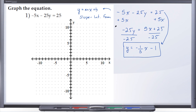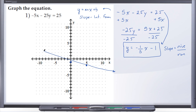Let's go ahead and graph this line. Negative 1 is our b, our y-intercept, so we go to negative 1 on the y-axis and plot that point. From here we use our slope — rise over run. Because our rise is negative, instead of going up we fall. So we go down 1 and then run to the right 5. That gives us our next point. We only need two points to create a line, so just pretend that's a straight line. There's our graph: y equals negative 1/5x minus 1.